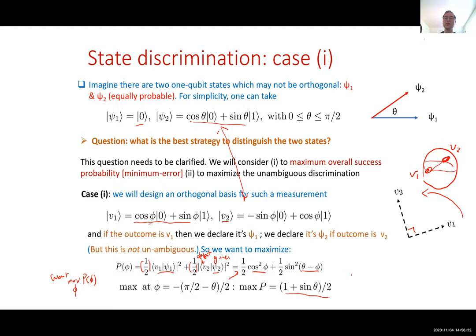We can verify: if θ = π/2, the states are orthogonal, and the probability of distinguishing them is unity — which is what we expect, since orthogonal states can always be perfectly distinguished.